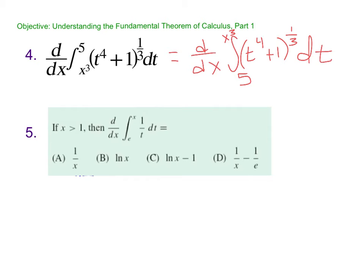Okay. So now what do I need to do here? Since we flip-flopped our bounds, I have to throw a negative out. So my answer is going to be negative. And then what do we get? We're going to substitute in our x cubed. So this becomes (x to the 12th plus 1) to the 1/3 and then times the derivative of the bound. Derivative of x to the 3rd is 3x squared. And that's our answer.